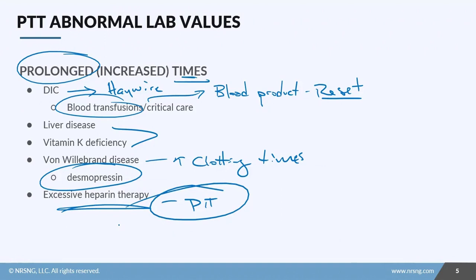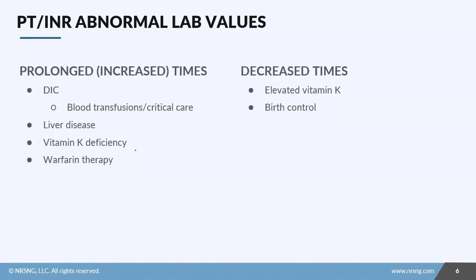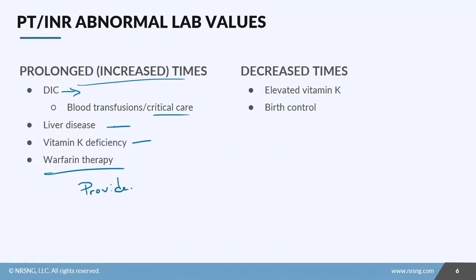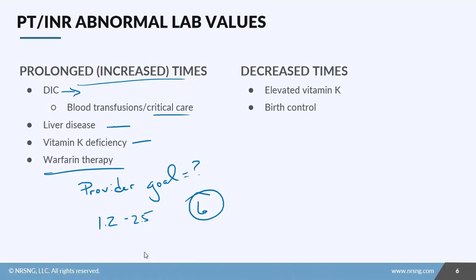For prolonged PT and INR values, you'll again see DIC — treat with blood transfusions and blood products, likely transfer to critical care. You'll also see it in liver disease and vitamin K deficiency. An increase is also expected with warfarin therapy — we want those values slightly elevated, but you need to know the provider's goal. A therapeutic goal might be 1.2 to 2.5, so if you see a value of 6, that's way too high and the patient is at significant risk for bleeding.